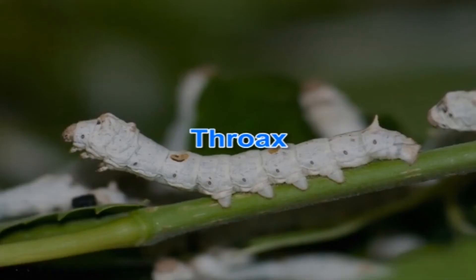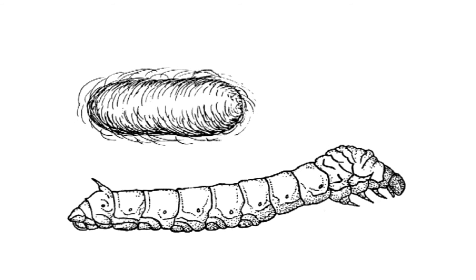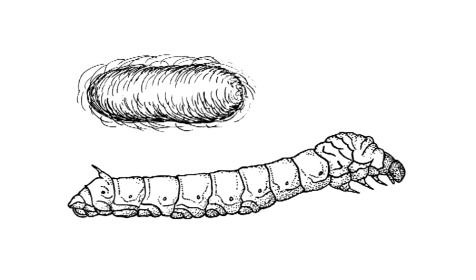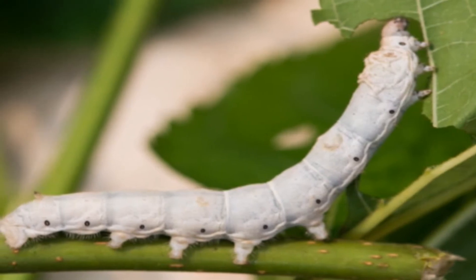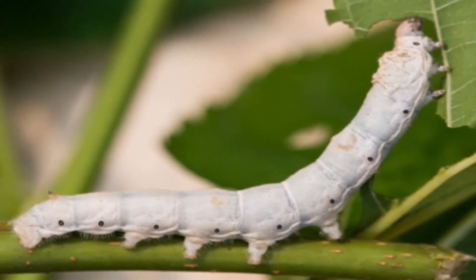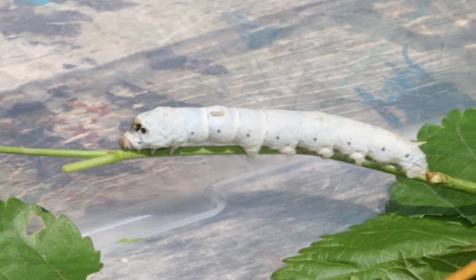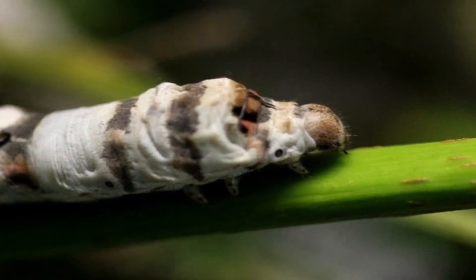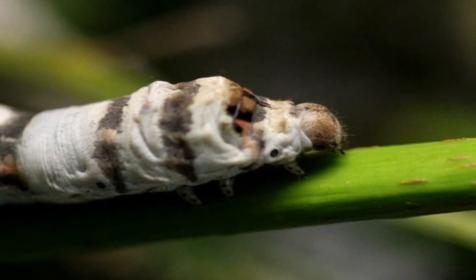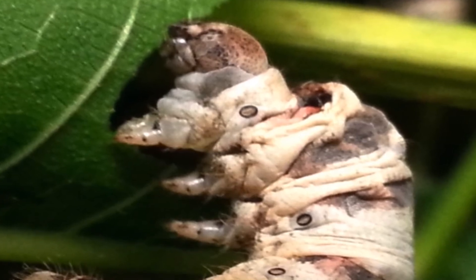The thorax region of the larva is three-segmented: prothorax, mesothorax and metathorax. Each of the three thoracic segments carries ventrally a pair of legs comprising three jointed segments. These are the true legs, conical in shape, carrying sharp distal claws. These claws are not used for crawling but for holding mulberry leaves while feeding. Silkworm contains spiracles on the dorsal side of the mesothorax.